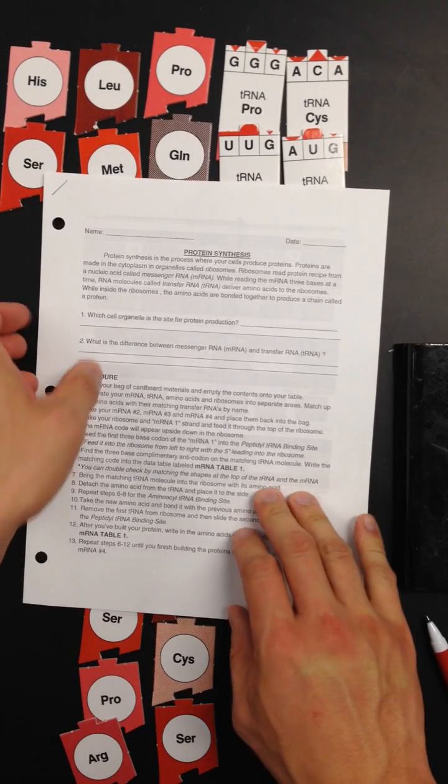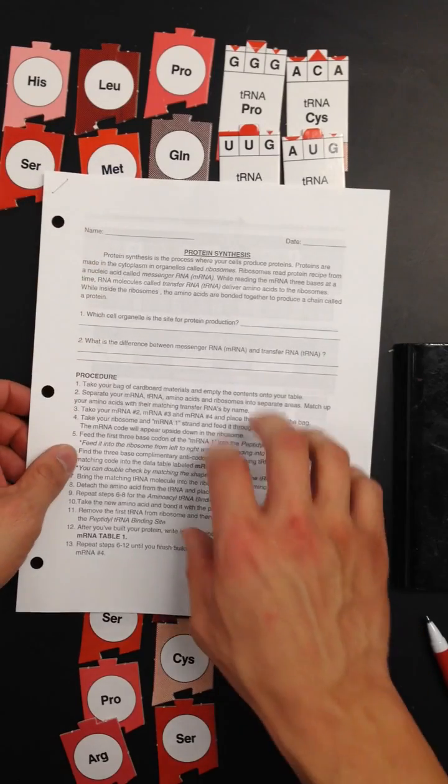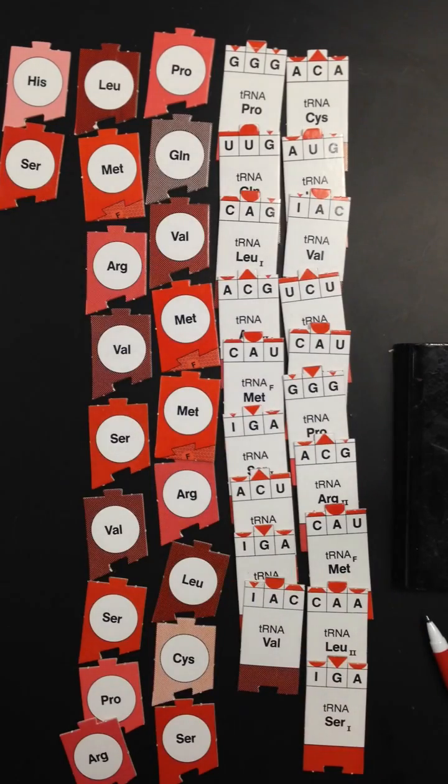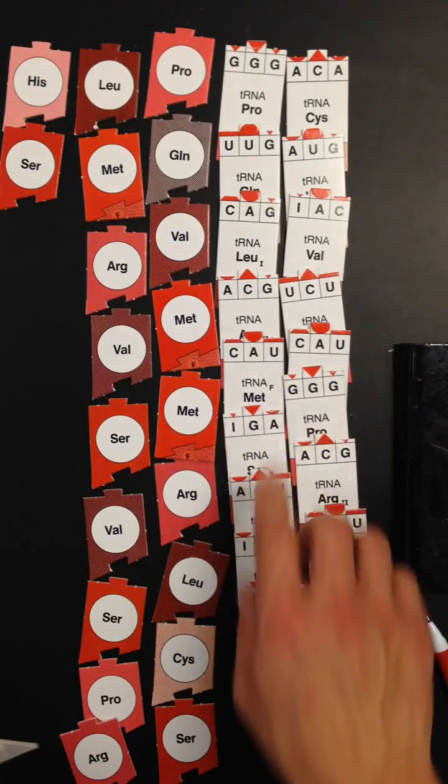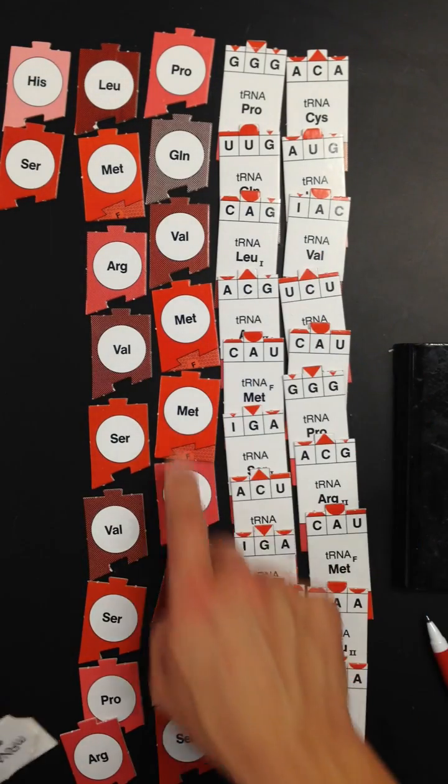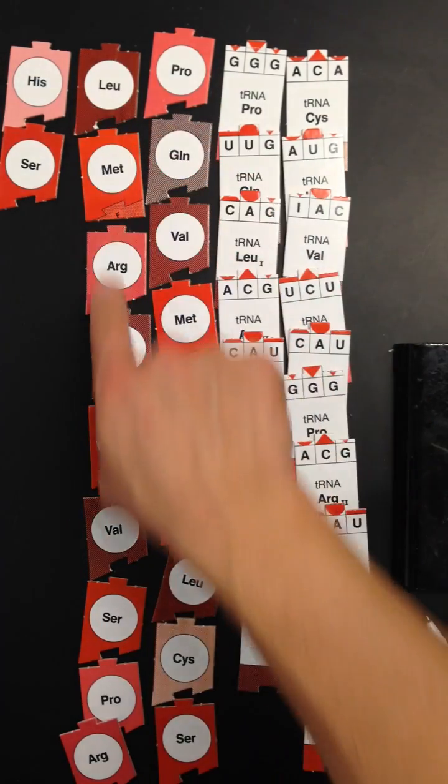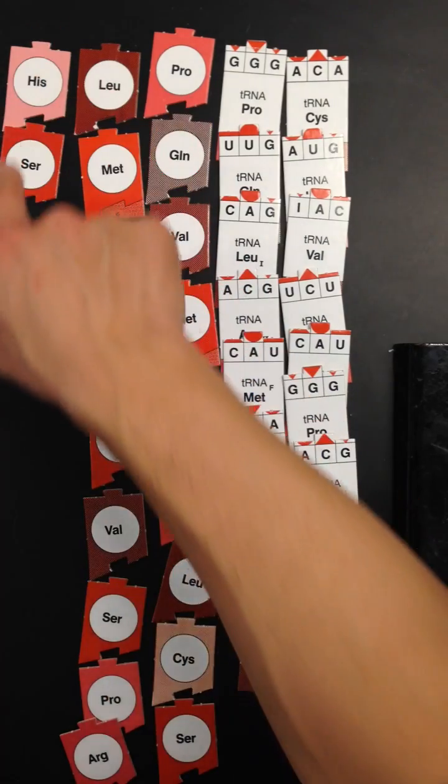Once you're done with that, you can empty out your plastic bag that has the cardboard pieces in them and start to sort them out. You have your cardboard pieces, which includes all of your transfer RNAs or tRNAs, and the amino acids that they bond to and transfer to the ribosome.